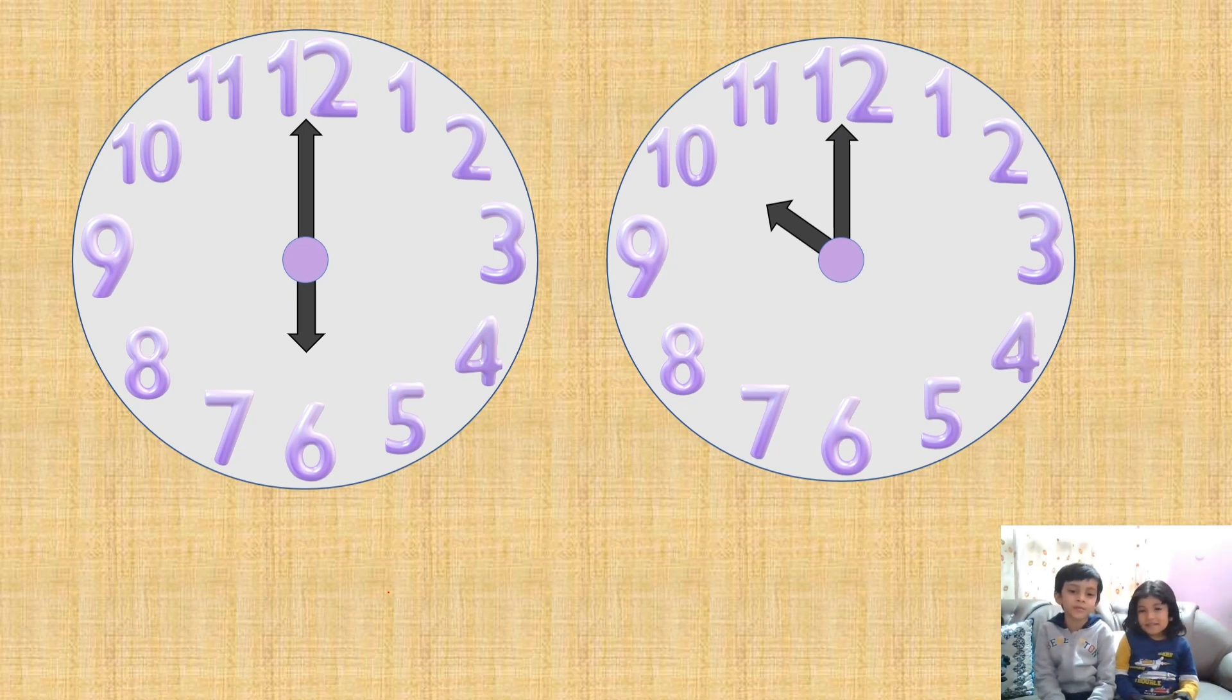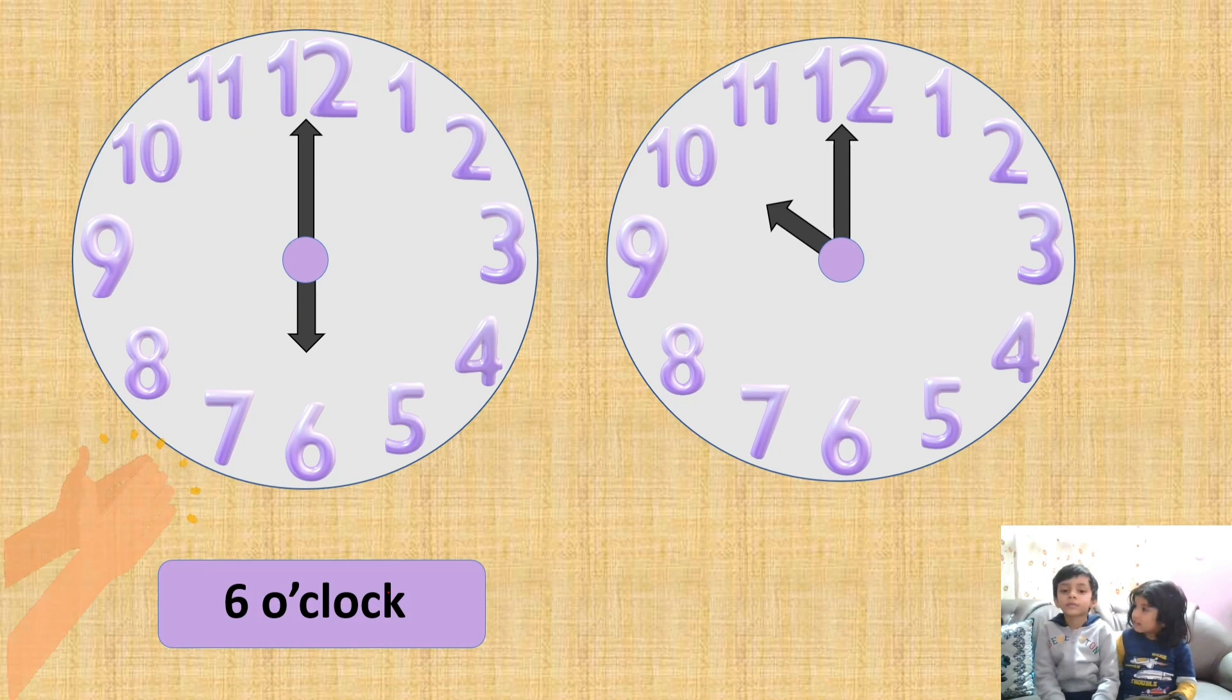I have my little sister Kashvi. She has learned how to tell time. Kashvi, in the first clock, the hour hand is pointing to 6 and the minute hand is pointing to 12. Can you tell the time? Yes, Riyadh, it is 6 o'clock.